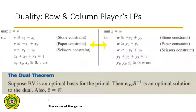There is a result called the dual theorem which states that if we have reached the optimal solution, then the objective function value for the primal — in this case V — will equal the objective function value for the dual — in this case W. In other words, at optimality we will get the same value for V and W.